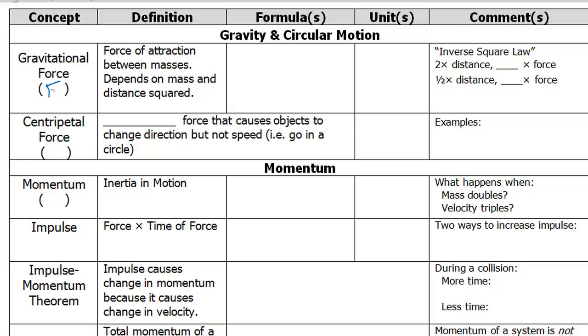For gravitational force, did you use the symbol F with a little g next to it? The force of attraction between all masses, and the equation for it looks like this. Force of gravity equals the gravitational constant times mass 1 times mass 2 over the distance between the masses squared.